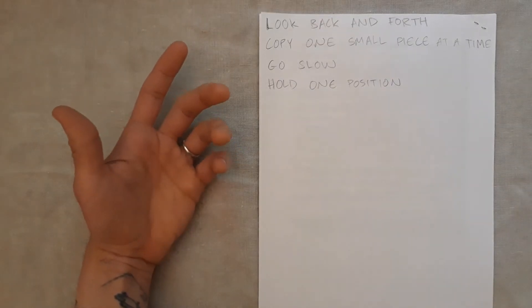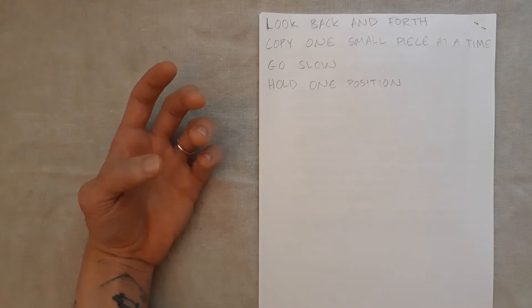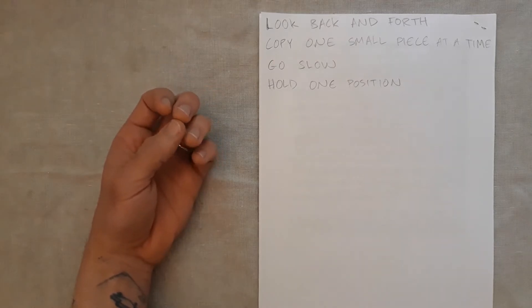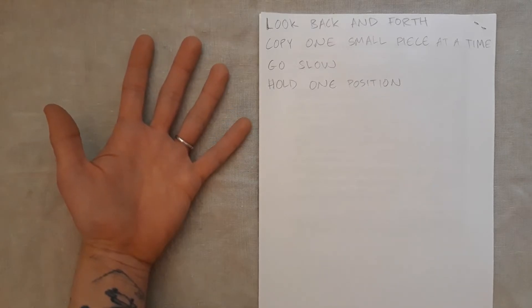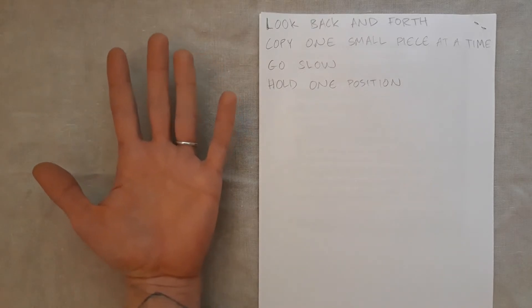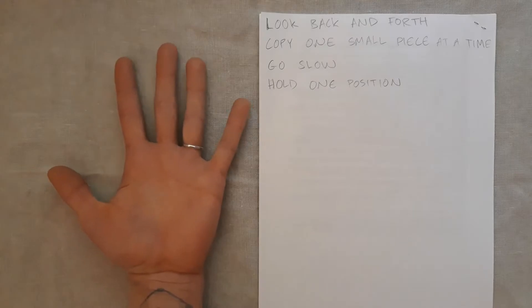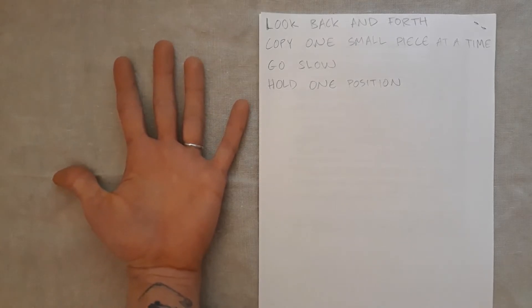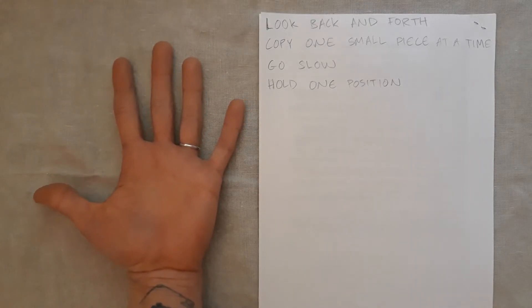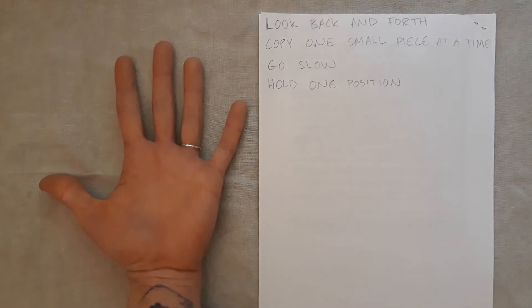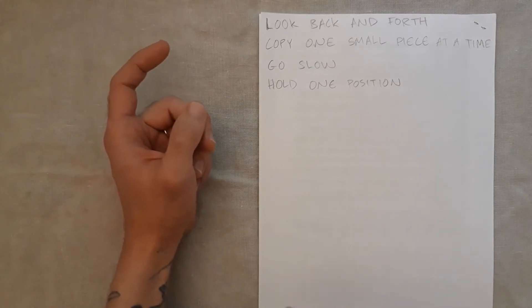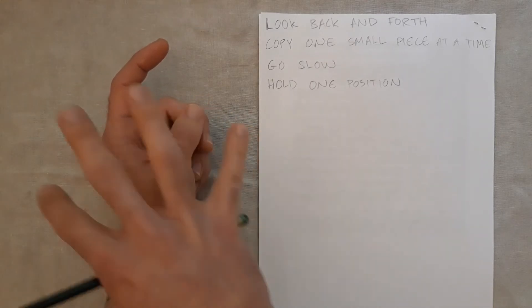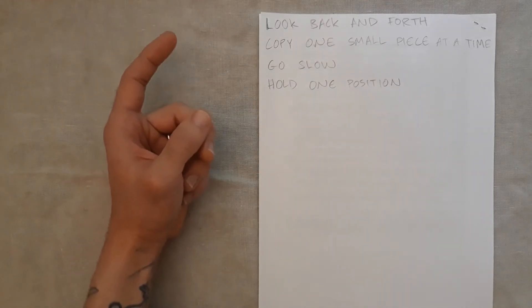I'm going to be drawing my hand to show you how to practice observational drawing using slow contour lines. I need to choose a position for my hand that I want to draw. You should not try to draw your hand flat because it's going to look very flat and boring. You want to choose a position that is not so flat, it's deeper, it has more movement to it.